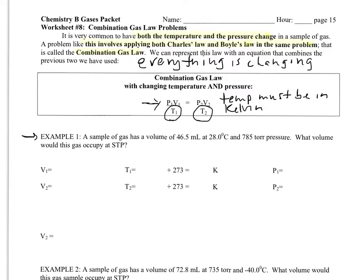Alright, so example one. Our sample of gas has a volume of 46.5 milliliters. The temperature is 28 degrees Celsius. So right away, I'm going to do 28 plus 273, convert that to Kelvin, and cross out my Celsius temperature so it doesn't sneak into my problem. My pressure is 785 torr, and I want to know the volume at STP. So again, this is telling me both about T2 and P2.